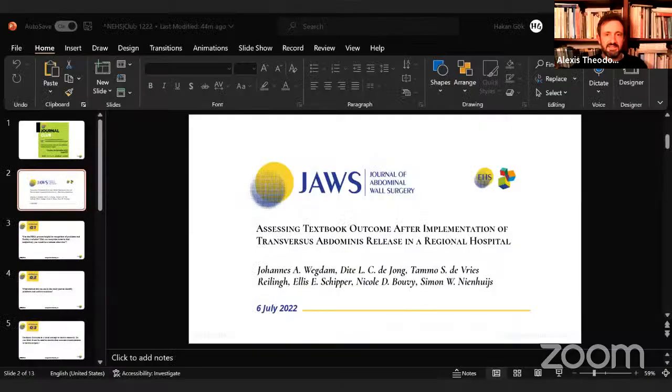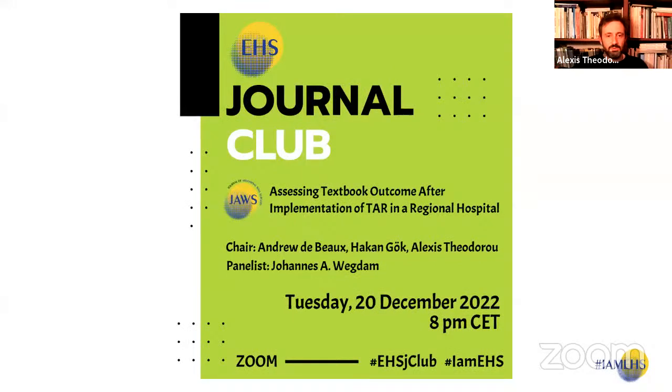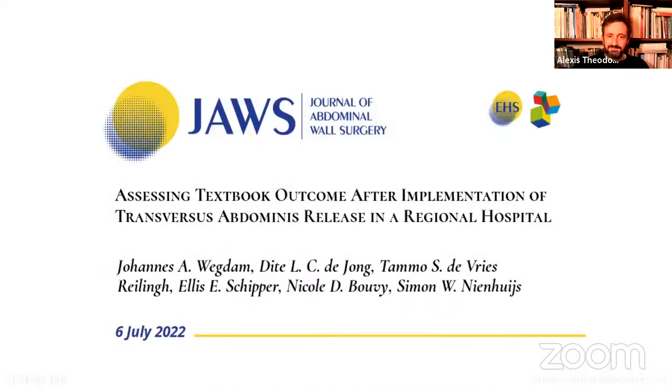If this is the first journal club you're participating in, we follow this format: first we present some basic things about the paper, then we have a round of prepared questions that we discuss, and at the end we take questions from the audience through the Q&A or chat. Hopefully we'll be done in an hour, so let's begin with the presentation.